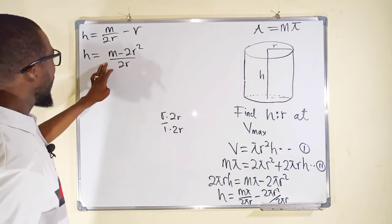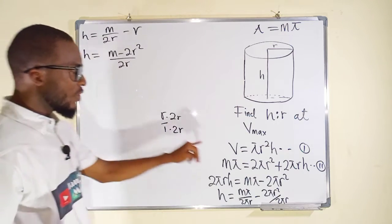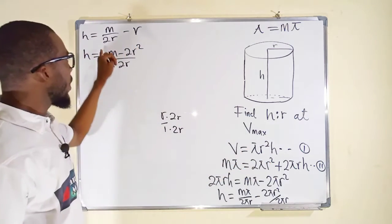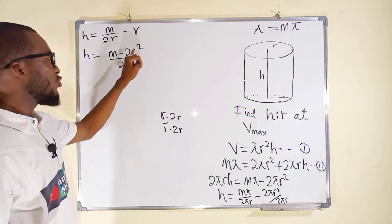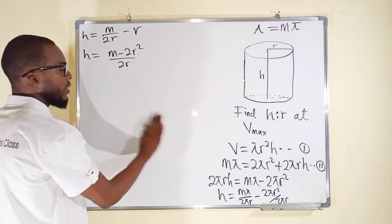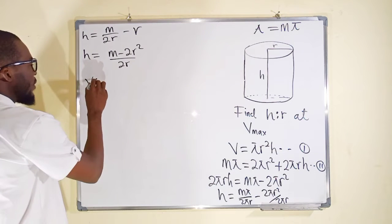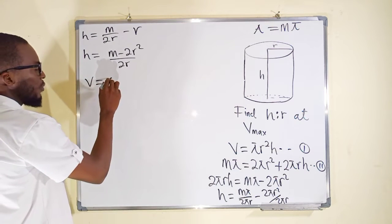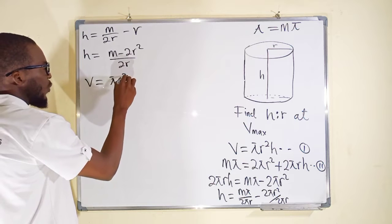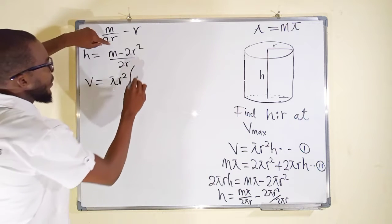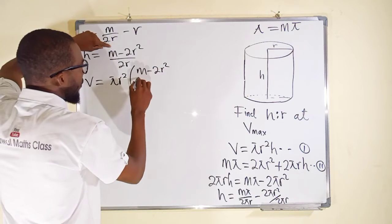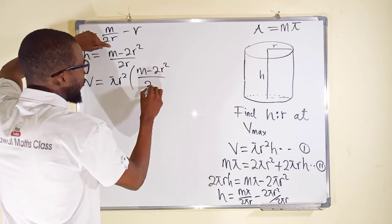Now, from equation 1 we have h, so instead of h we substitute (M minus 2r squared) over 2r. From equation 1, V will now be equal to pi r squared multiplied by (M minus 2r squared) over 2r.